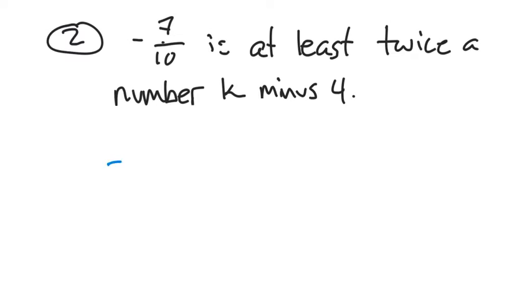So negative 7 tenths. Now it says here, 'at least.' So that could mean that negative 7 tenths is more than, right? Because if it's at least, that's the smallest it can be - it could be bigger than. But it could also be equal to. So we add this extra line underneath. It could be greater than or equal to.